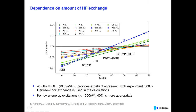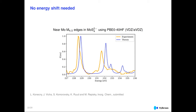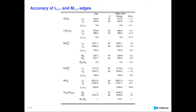This is the spectrum for the M4,5 edges of molybdenum tetrasulfide at low energy. No shift has been applied, and we get very good agreement with experimental data — both for the spin-orbit splitting and the onset of absorption peaks. The worst-case error is about 15 eV for a transition near 12,000 eV, so the errors are very small. At the four-component level with 40–60% exact Hartree-Fock exchange, we obtain accurate results for the onset of absorption edges.